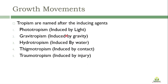For phototropism, the shoot system is positively phototropic while the root system is negatively phototropic. In gravitropism, it is the opposite - the root is positively gravitropic and the shoot system is negatively gravitropic. For hydrotropism, according to water availability, roots mostly grow towards the source of water, so they are positively hydrotropic.